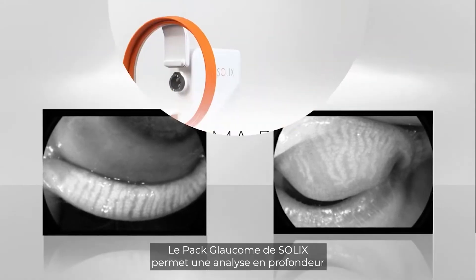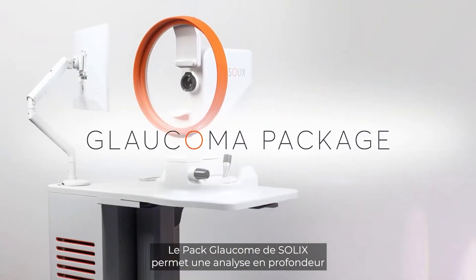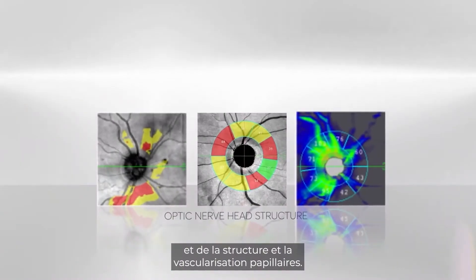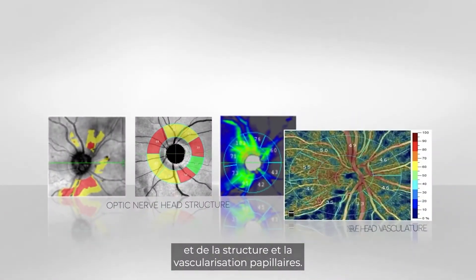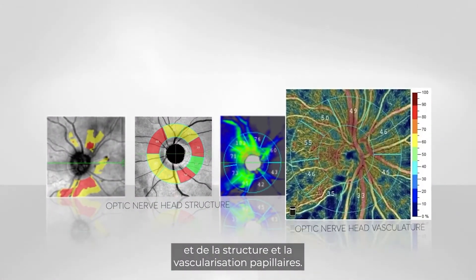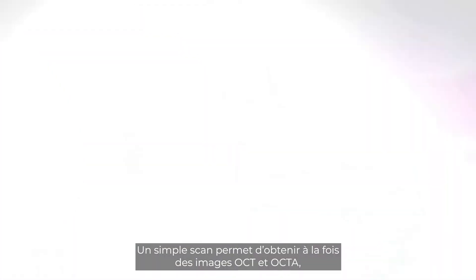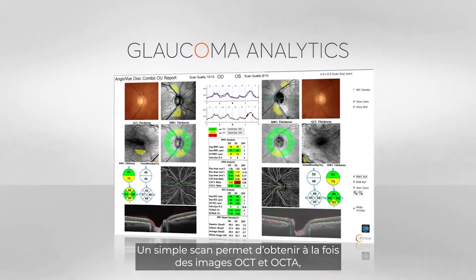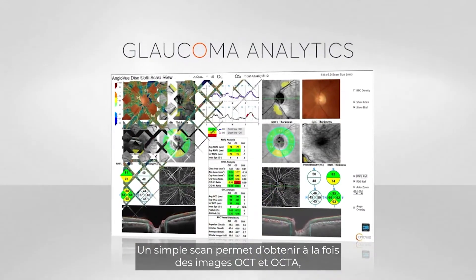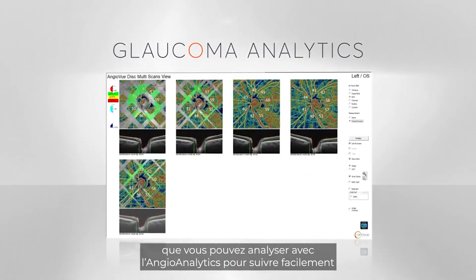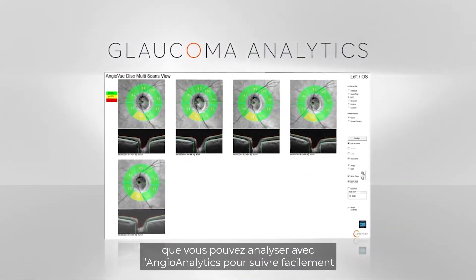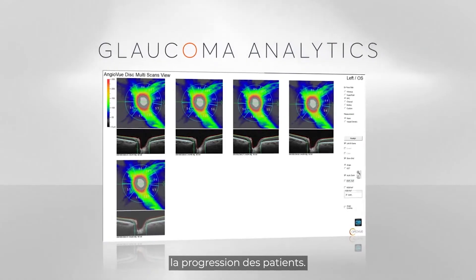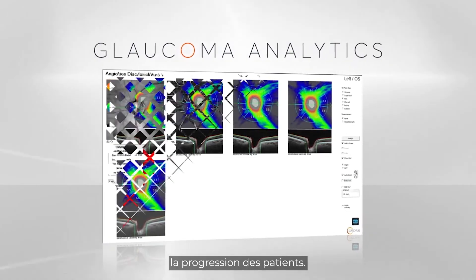The Solix glaucoma package powers in-depth analysis of the optic nerve head structure and vasculature. A single scan generates both OCT and OCTA images with angioanalytics metrics to help you quickly understand each patient's rate of change.